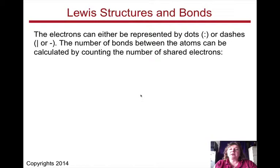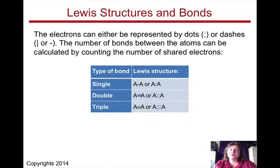So the electrons can be represented by dots or dashes, and the number of bonds between the atoms can be calculated by counting the number of shared electrons. So, for instance, if you have a single, you have two shared electrons. A double, we have four shared electrons. And a triple, we have six shared electrons.